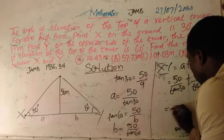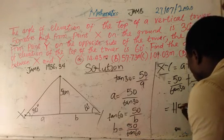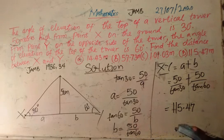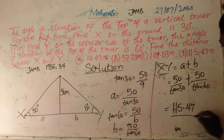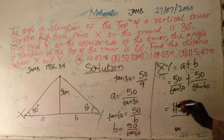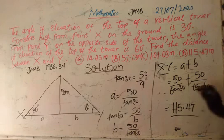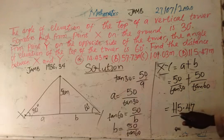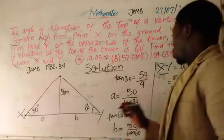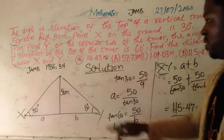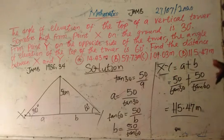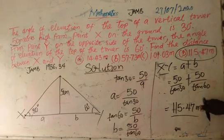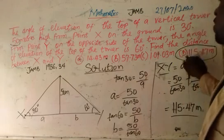The calculator gives us 115.470538, which is approximately 115.47 meters. That is the distance between X and Y — 115.47 meters, since the unit is meters. Checking the options given, option D satisfies the distance we have calculated, so it is the right answer.